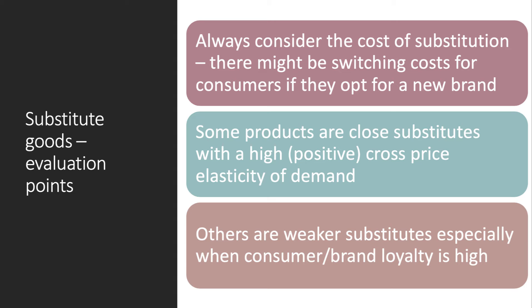Three evaluation points to think about with substitutes. First, always worth thinking about the cost of substitution — you might be thinking about switching to a different brand when there's been a price change, but there could be a switching cost for consumers, such as a contractual obligation or penalty payment. Secondly, there's a difference in the degree of substitution. Some products are close substitutes, performing very similar functions, and tend to have a high positive cross price elasticity — your choice of breakfast cereal or instant porridge, for example. Other products tend to be weaker substitutes, particularly when consumer and brand loyalty is high, meaning people don't change their spending when the relative price changes.